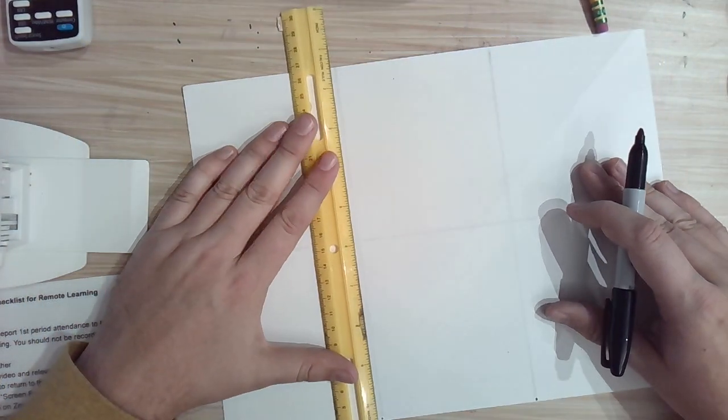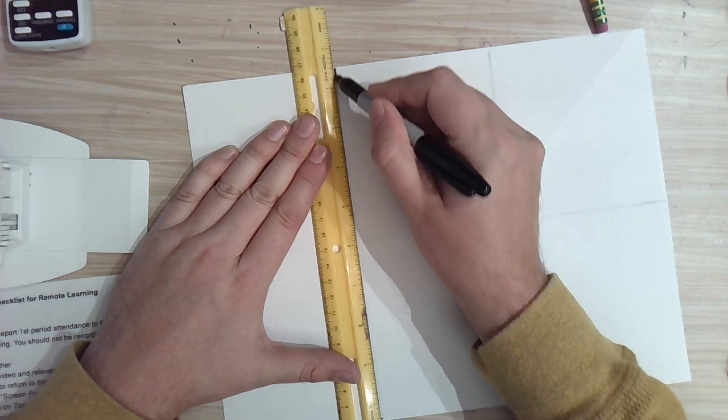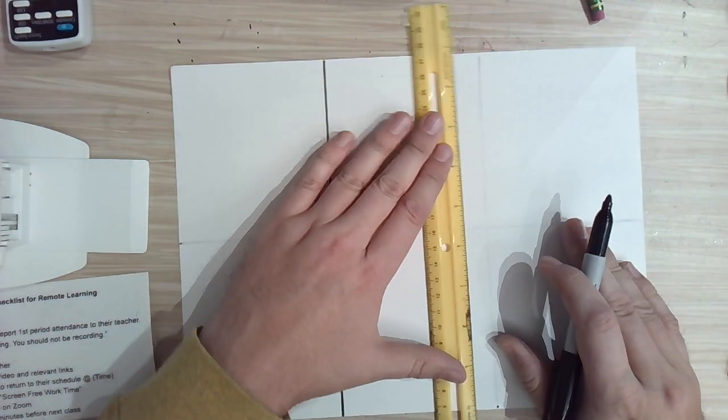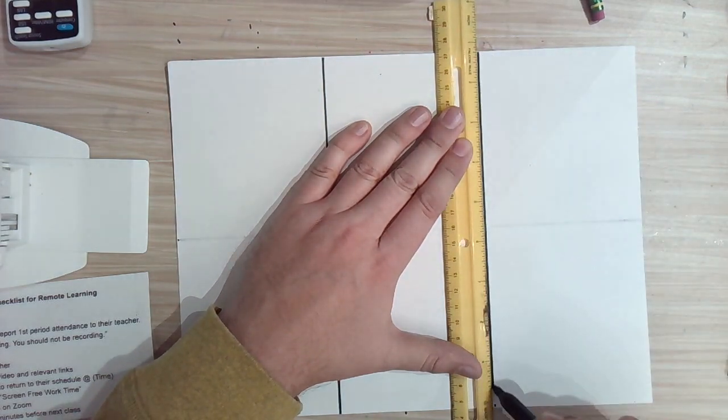I could erase my pencil lines now, or I could flip it over, and I can see through the paper now, and I can get a nice and neat side to work on. So that's a cool trick for setting up your paper.